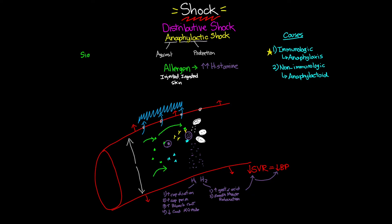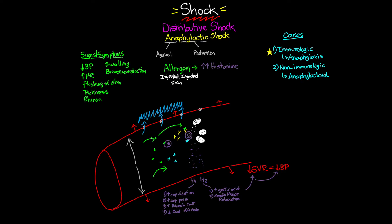Let's talk about signs and symptoms your patient might exhibit. Just like every other type of shock, you'll see decreased blood pressure or hypotension, as well as massive systemic swelling. As the body compensates for hypotension, you'll see an increased heart rate. As a result of histamine release, you'll have bronchoconstriction. Patients may also have flushing of the skin, itchiness, and rhinorrhea — a runny nose. As shock progresses, you'll see all typical shock signs.